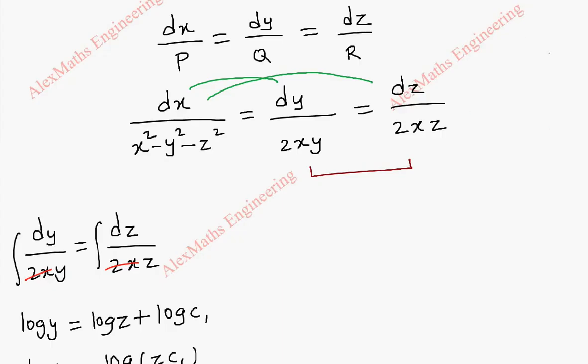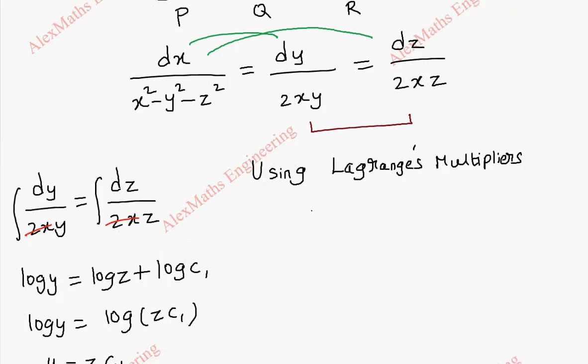So here let us take the multipliers using Lagrange's multiplier. So here I am going to use x, y and z. So we have to choose a proper multiplier in such a way that it gets simplified in order to integrate later. So this multiplier, I have to multiply here. Before that let me take as it is what are the terms present.